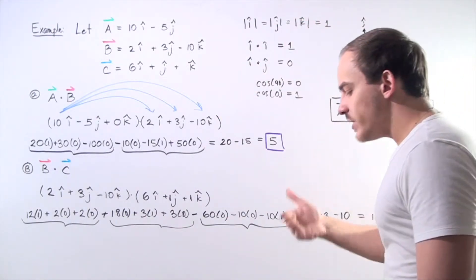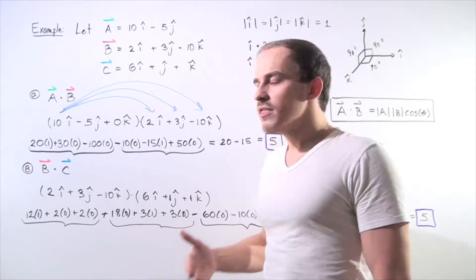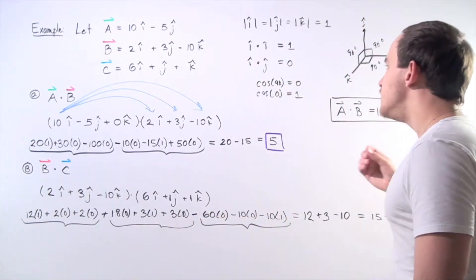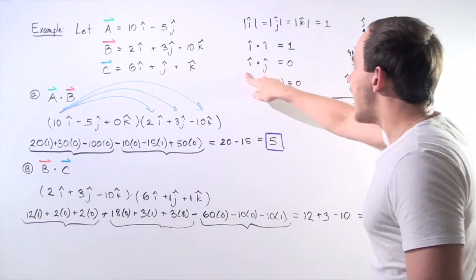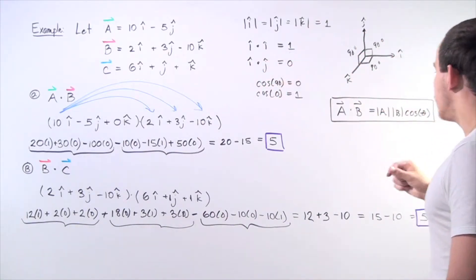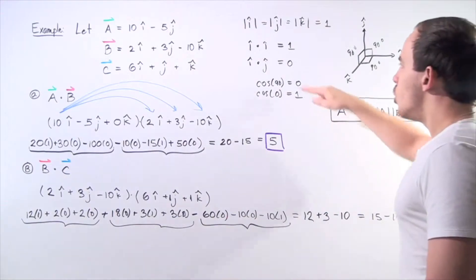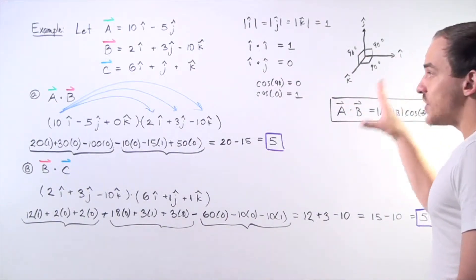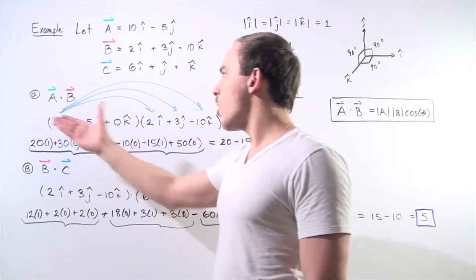Now, what if we take the dot product of two unit vectors that lie at an angle of 90 degrees to one another? For example, I hat and J hat. Because cosine of 90 is 0, we'll get a value of 0. With that said, let's move on to Part A.